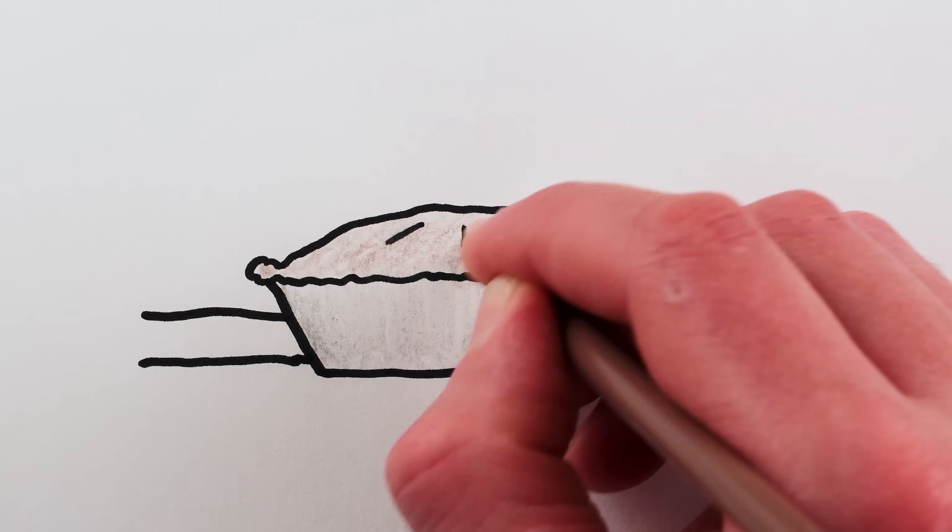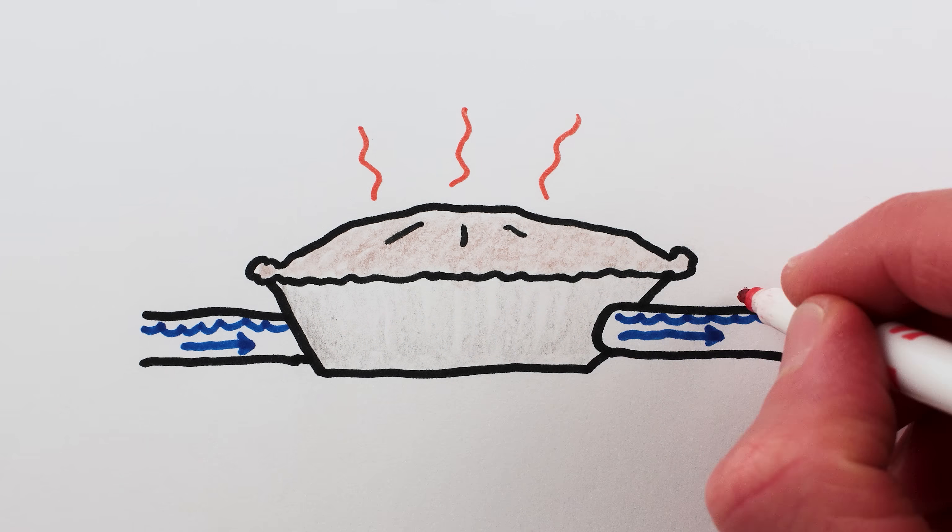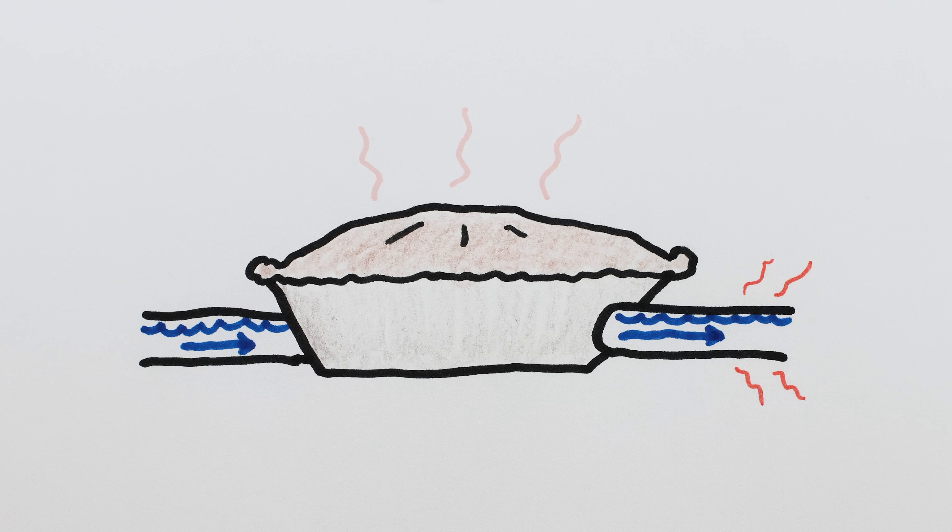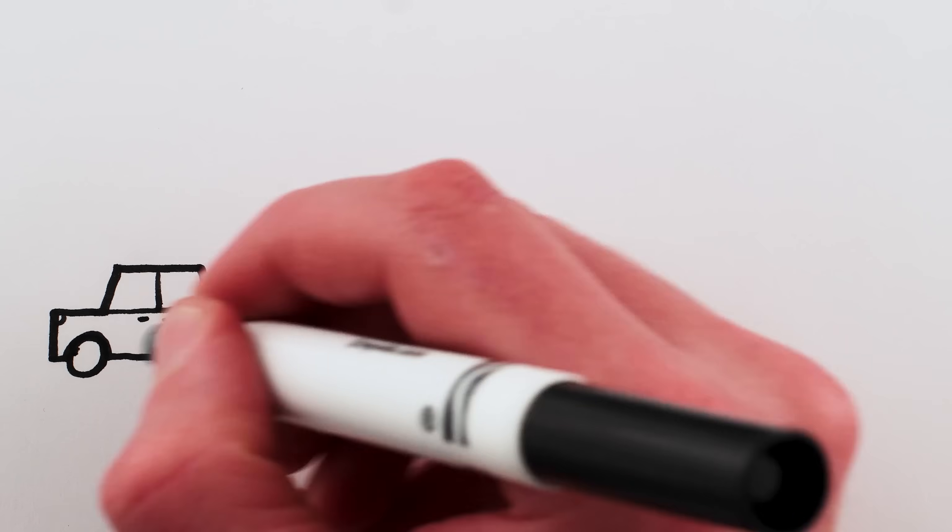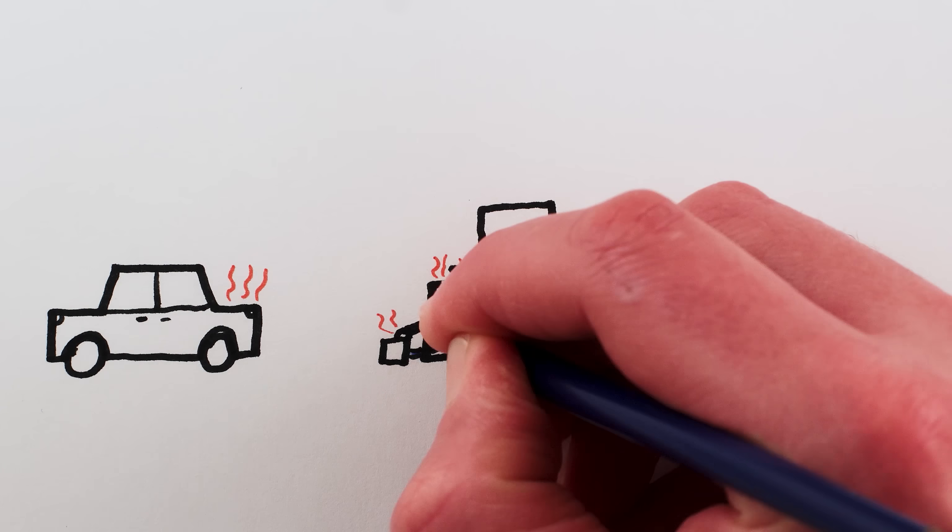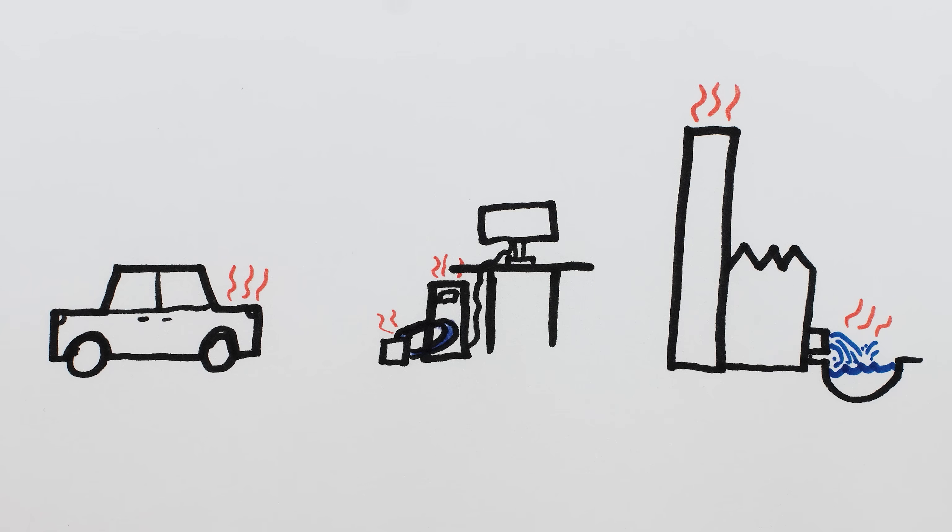The first water cooling method is to run cool water over or through the hot object so the water warms up and takes away the heat, and therefore cools the object down. This direct transfer of heat is the basic idea behind the radiators and car engines, liquid cooling of fancy gaming computers, and water cooling of power plants.